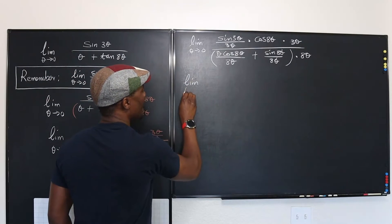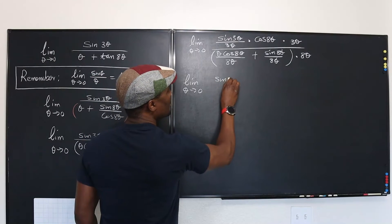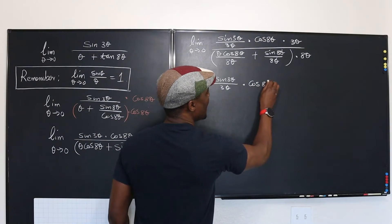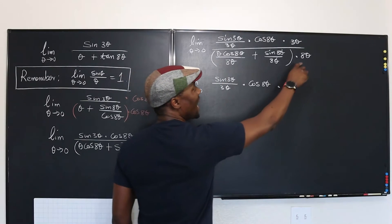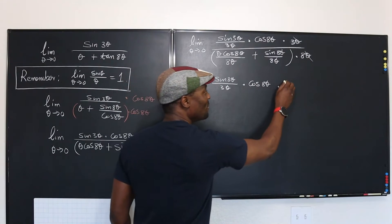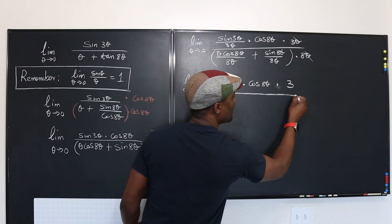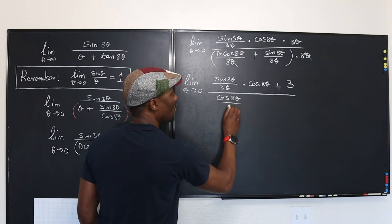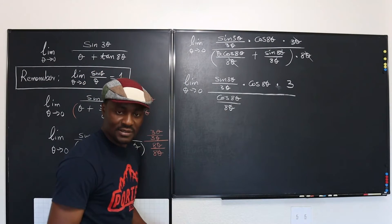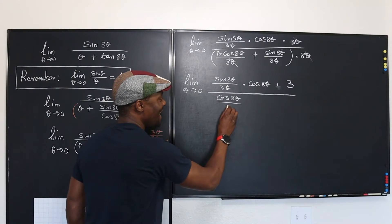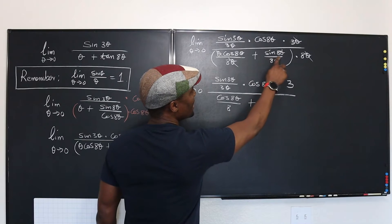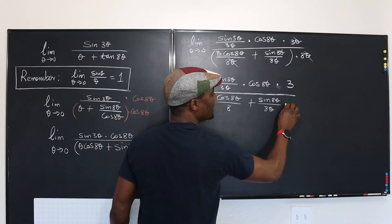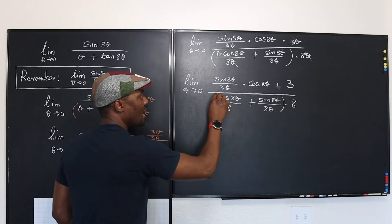Now let's simplify. In the numerator, sine 3 theta over 3 theta, multiplied by cosine 8 theta, multiplied by 3. The two thetas in the numerator cancel, leaving just 3. In the denominator, the theta cancels, giving cosine 8 theta over 8, plus sine 8 theta over 8 theta, all still multiplied by 8 on the outside.